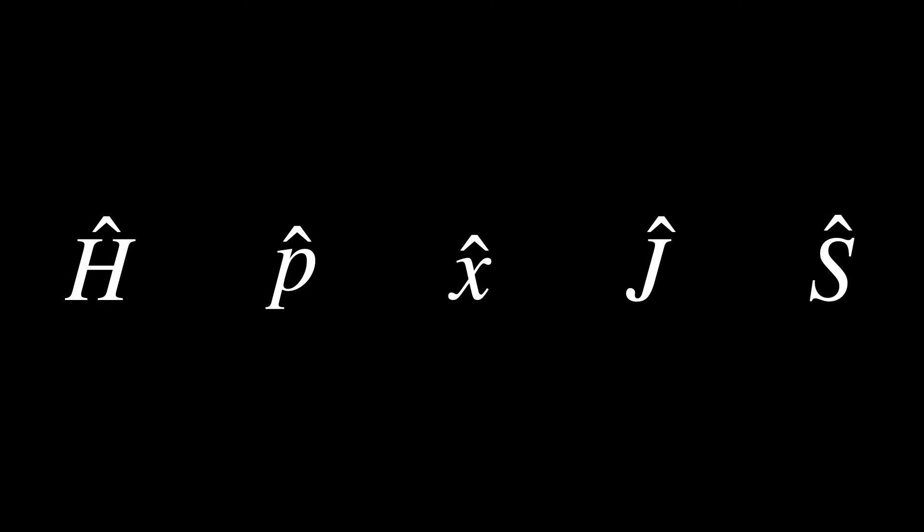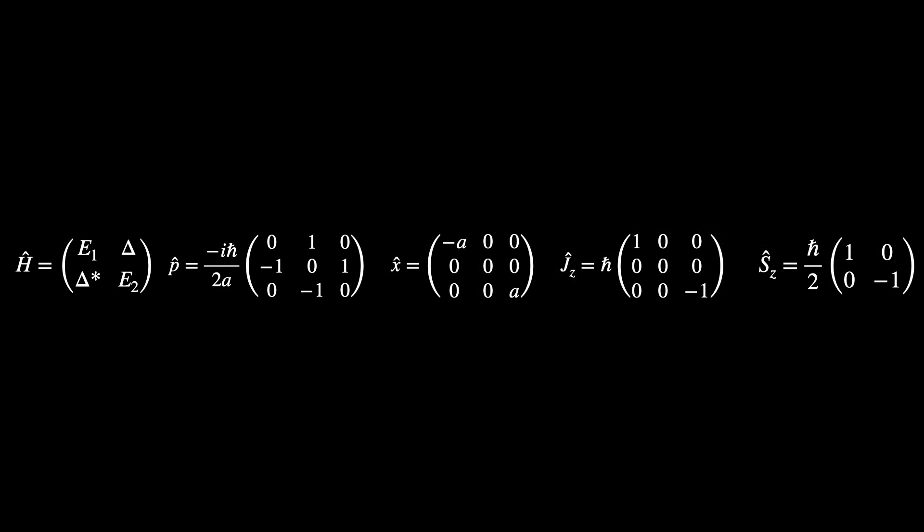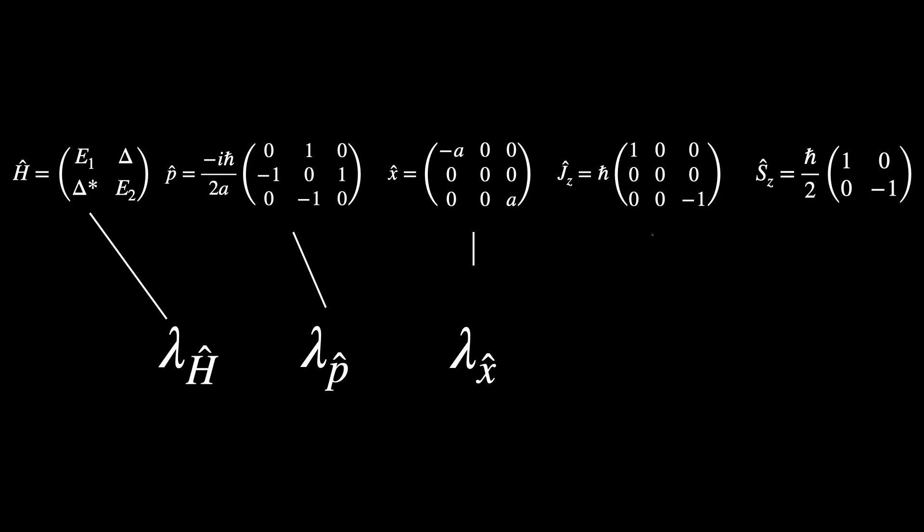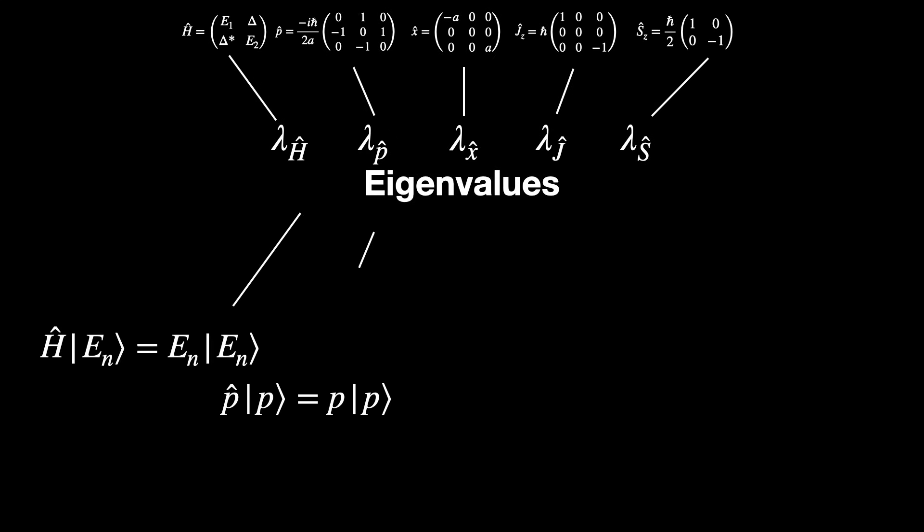In quantum mechanics, observables like energy, momentum, position, angular momentum, spin, and so on, are all represented by operators, so matrices. Their eigenvalues correspond to measurable quantities, and eigenvectors represent quantum states.